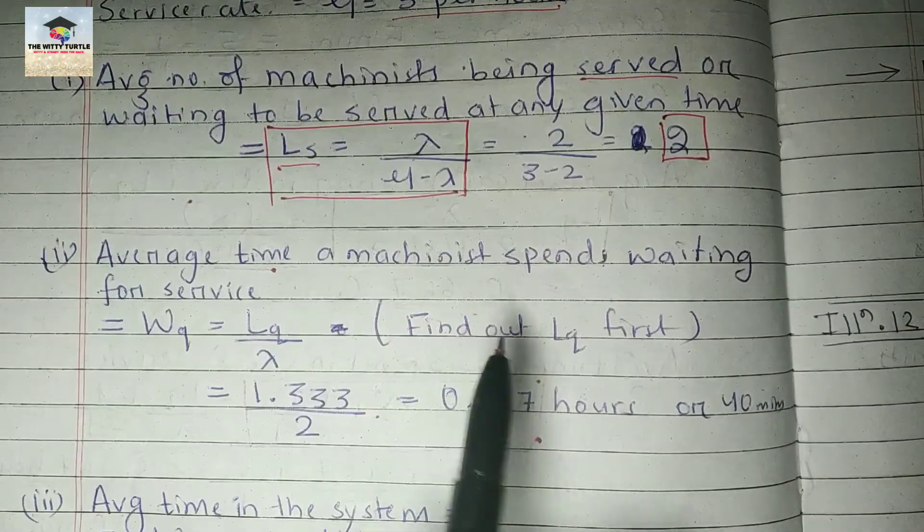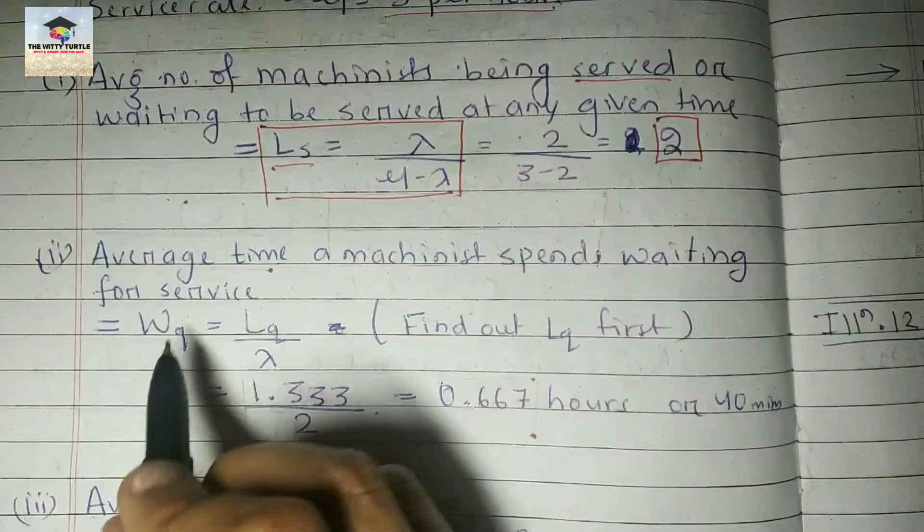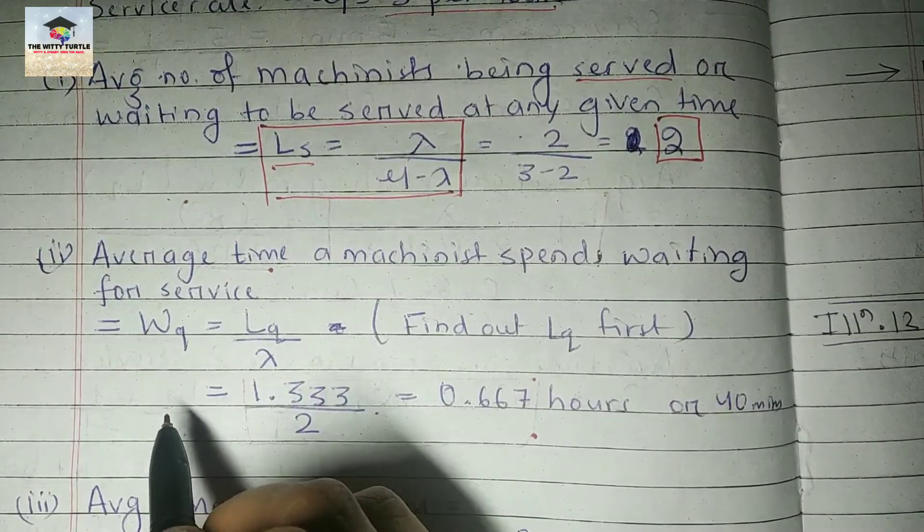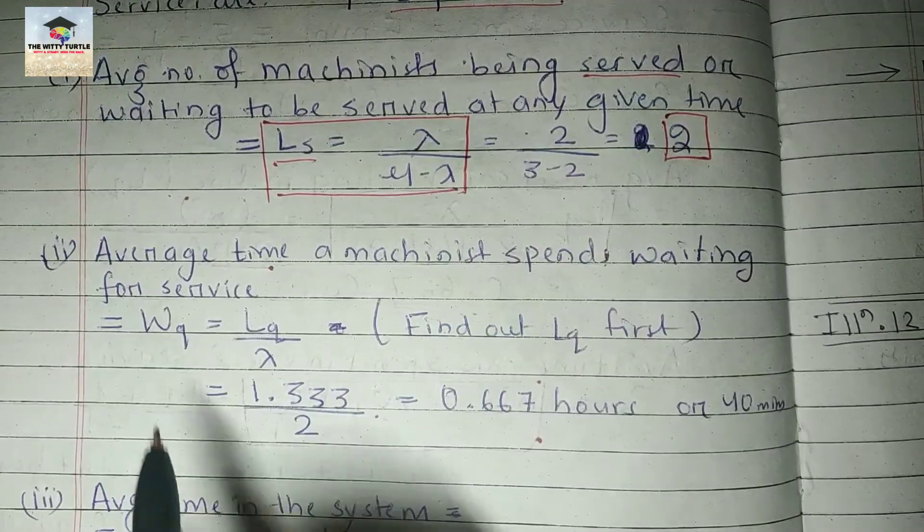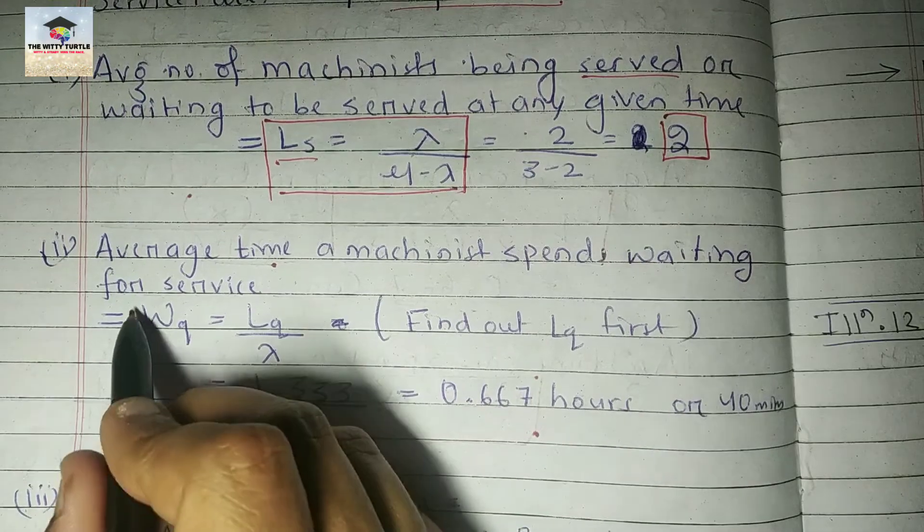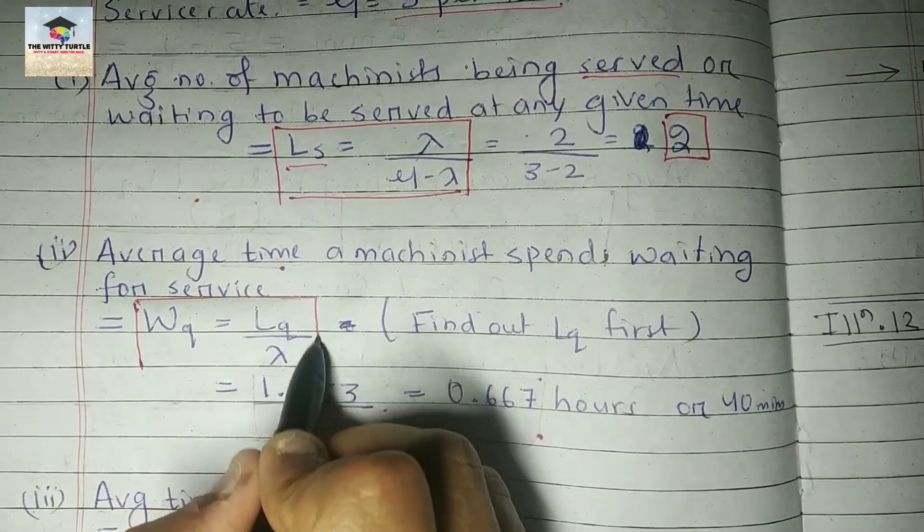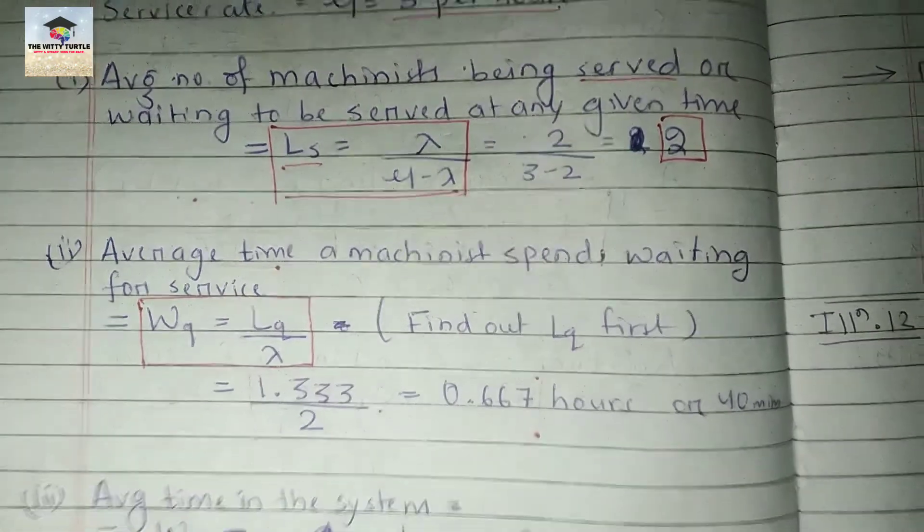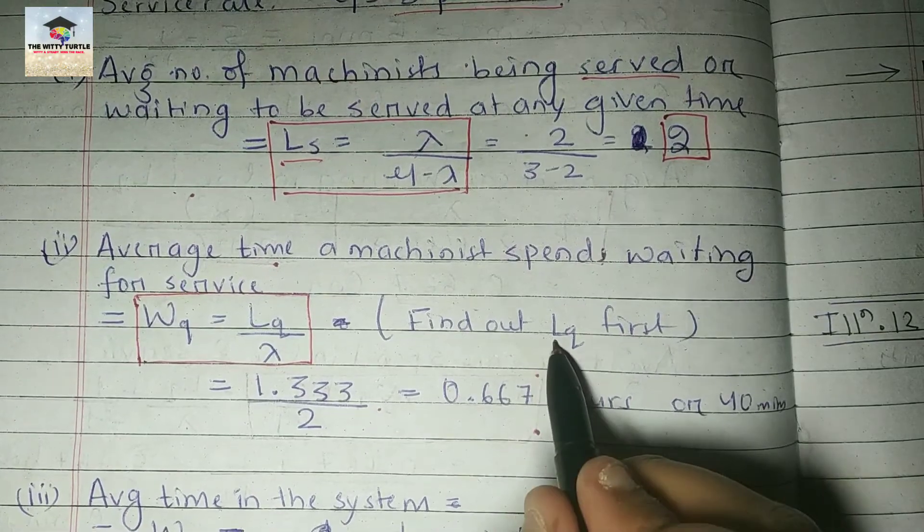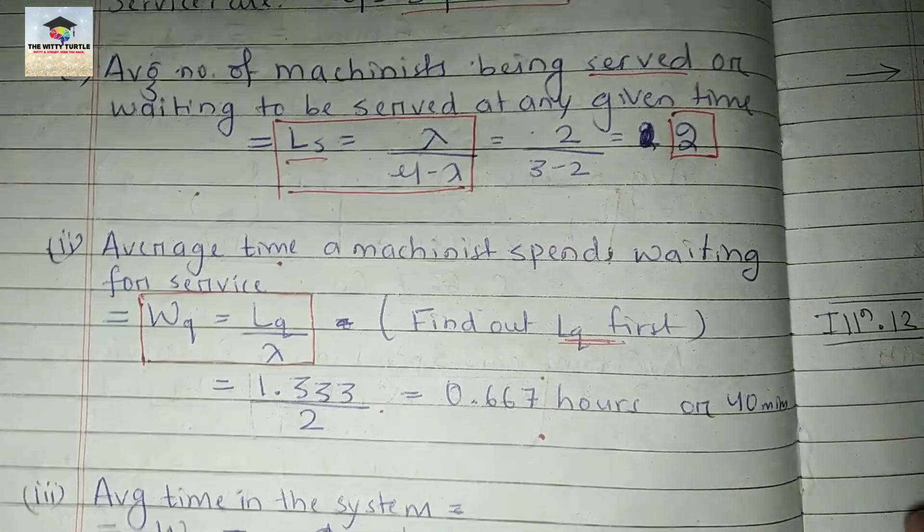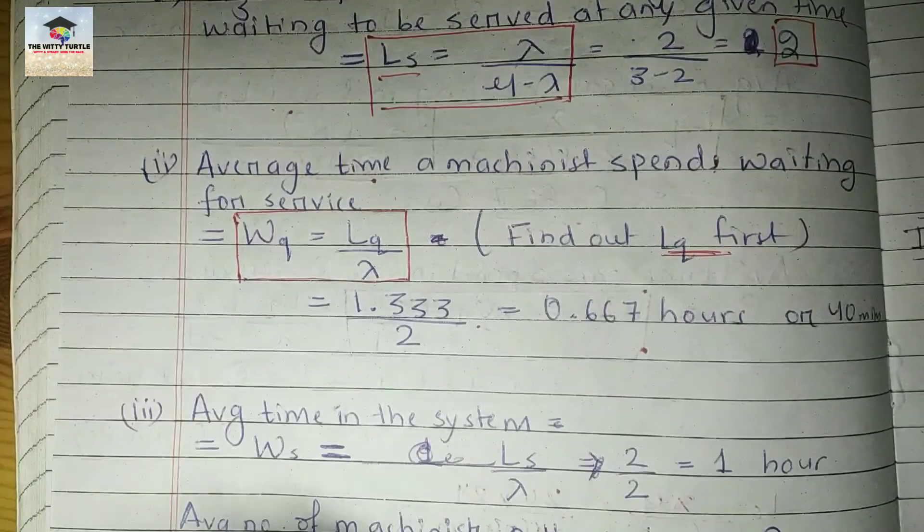Next, the second question is average time a machinist spends waiting for service. The symbol is Wq, and the formula for calculating Wq is Lq by lambda. So first you have to find out Lq.